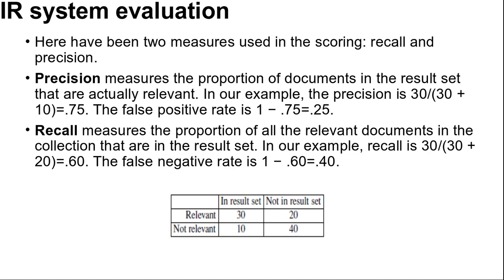Next is IR system evaluation. There is a question: how do we know whether an IR system is performing well? We undertake an experiment in which the system is given a set of queries and the result sets are scored with respect to human relevance judgments. There have been two measures used in the scoring: recall and precision. Imagine that an IR system has returned a result set for a single query, for which we know which documents are and are not relevant, out of a corpus of 100 documents.